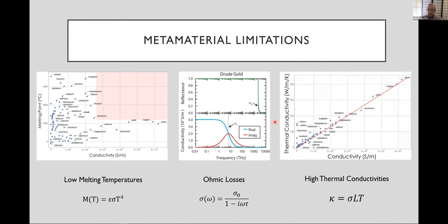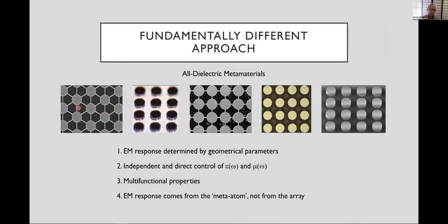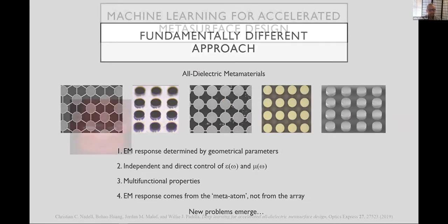So what we need then is an alternative way to form metamaterials, and people have been working on that a lot. We've done a lot of work here as well. And a substitute for the metal-based approach is to use dielectric resonators. You can think of these as Mie resonances or dielectric resonators or shunted waveguides, but they provide many of the same capabilities that metal-based metamaterials have, but new problems emerge. And so that's what led us to deep learning.